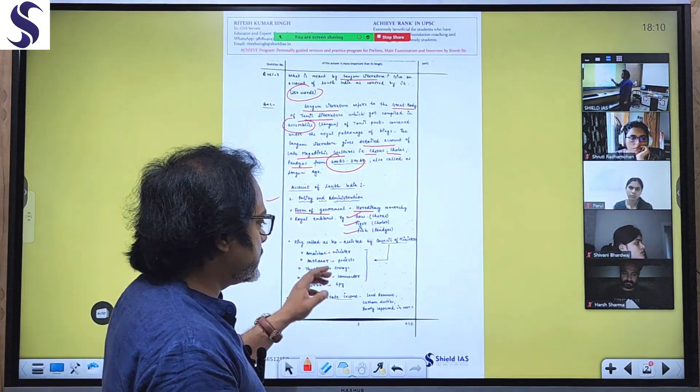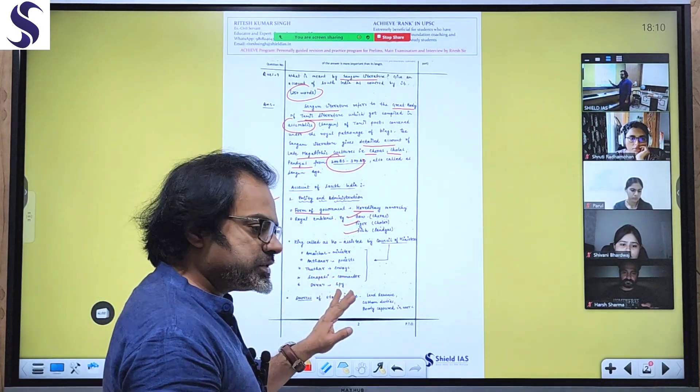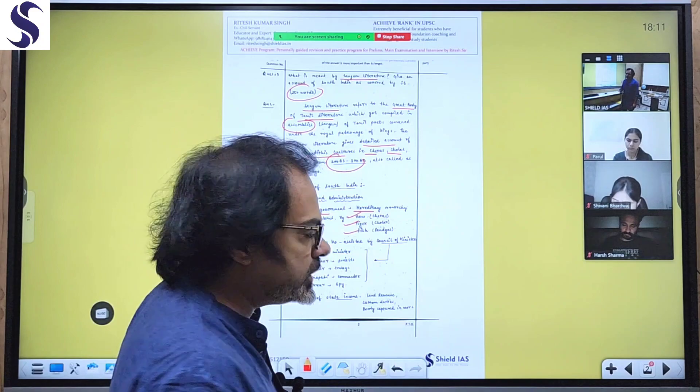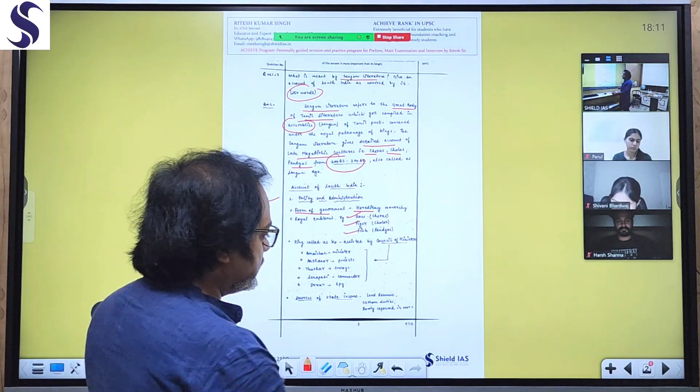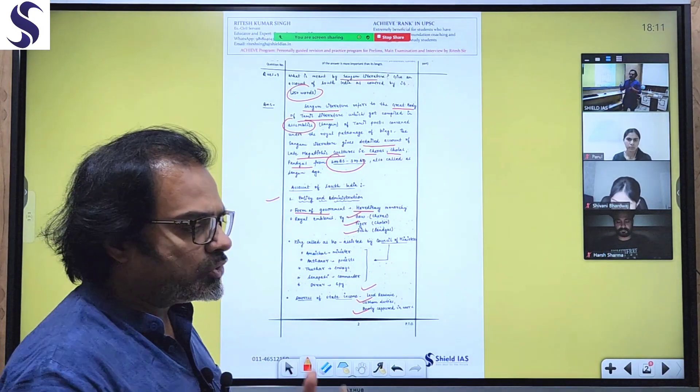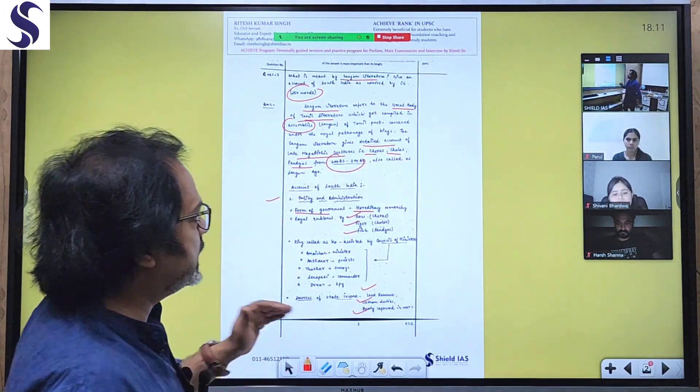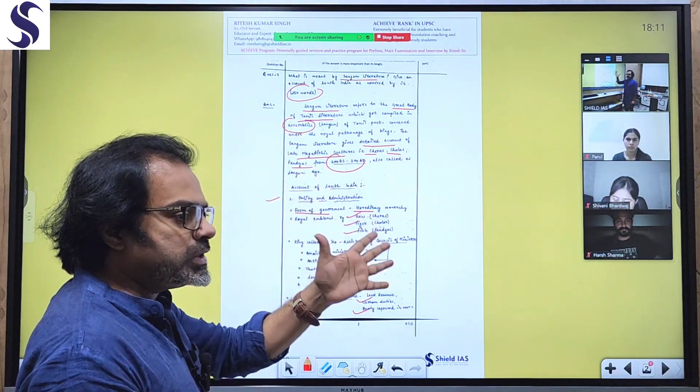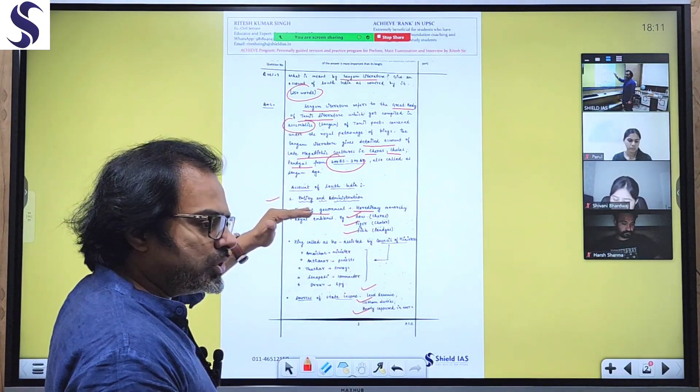Starting with polity and administration - we should write first the polity, then economy, then society, then art and culture. The form of government was hereditary monarchy. We're talking about three dynasties here: Cheras, Cholas, and Pandyas. All three were hereditary monarchies. Their symbols were: bow for Cheras, tiger for Cholas, and fish for Pandyas. The king was assisted by a council of ministers - their names and portfolios are properly mentioned. The sequence is well laid out here: introduction defining Sangam literature, then the period, then polity and administration.